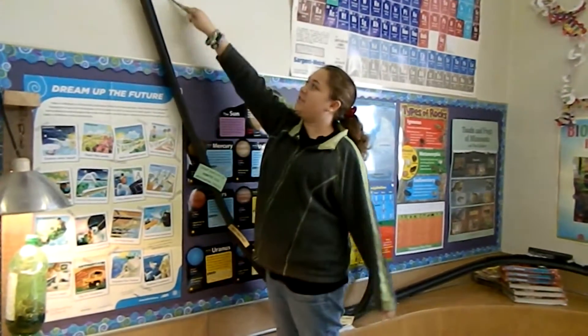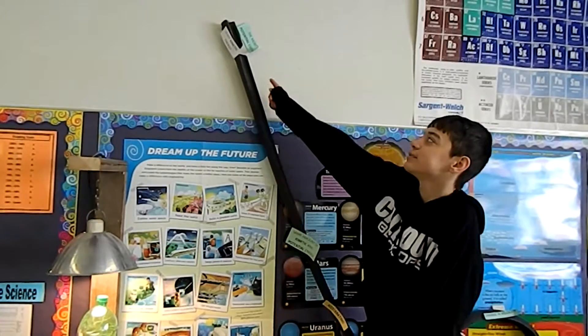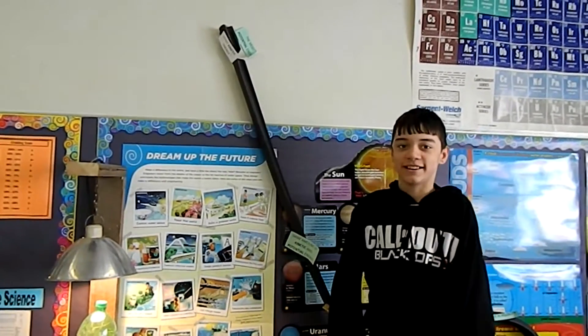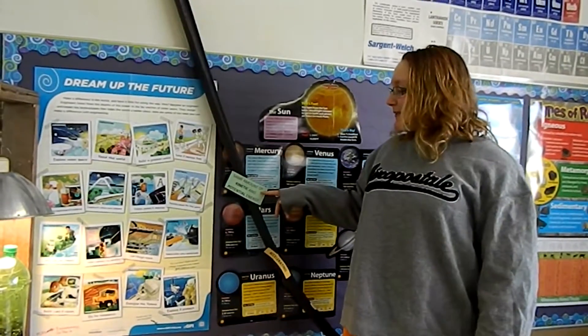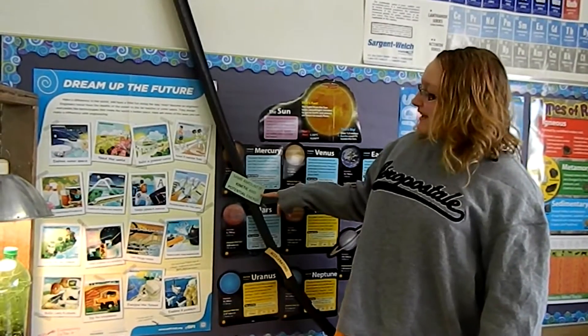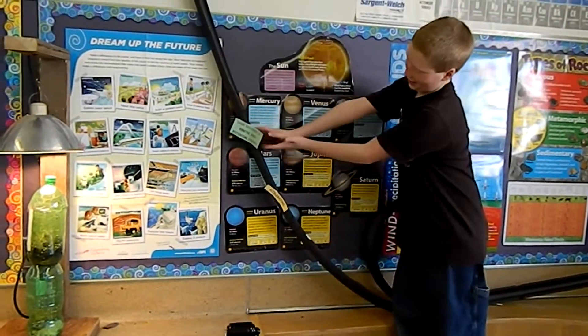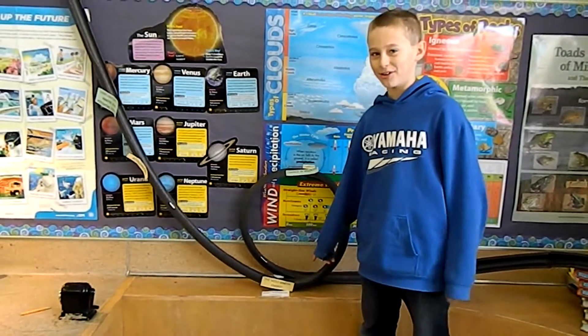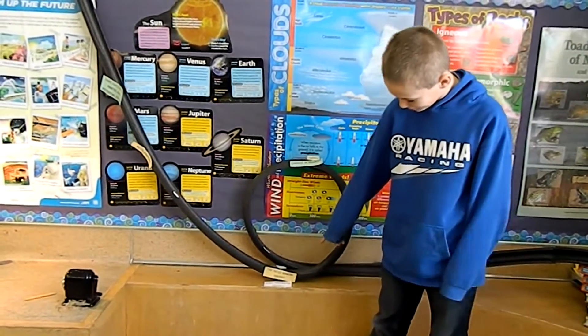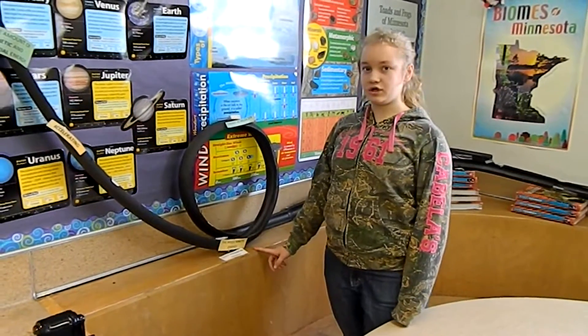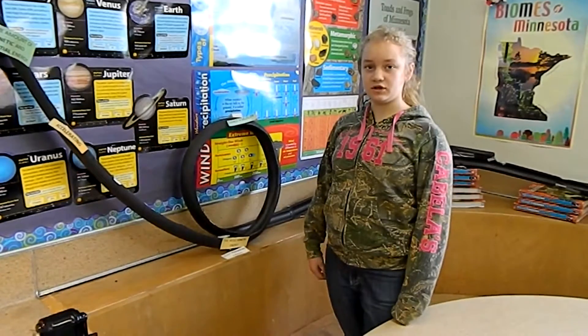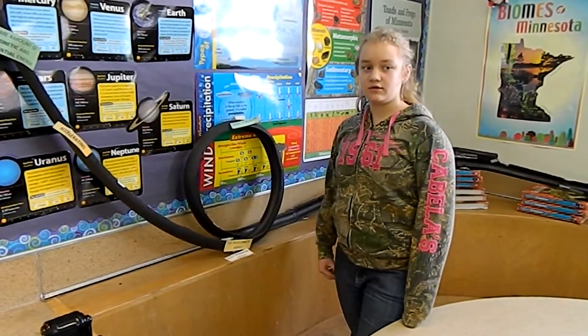This is potential energy — the definition is energy stored in an object or material. The most potential energy is where there is the least kinetic energy. This is where the same amount of kinetic and potential energy is. This is where there is the most kinetic energy — the definition is the energy of a moving object.